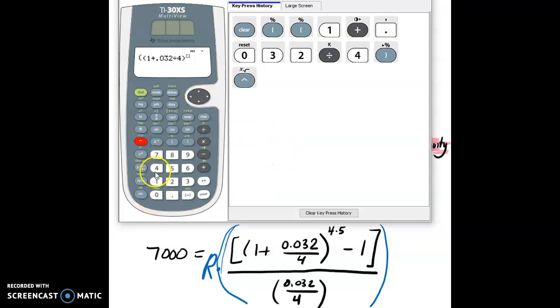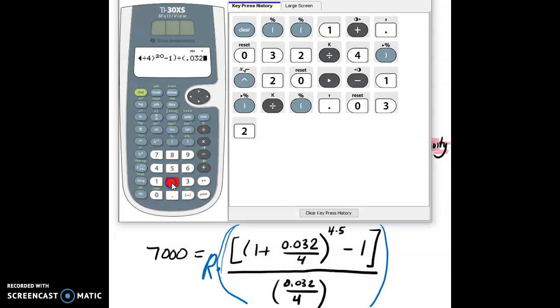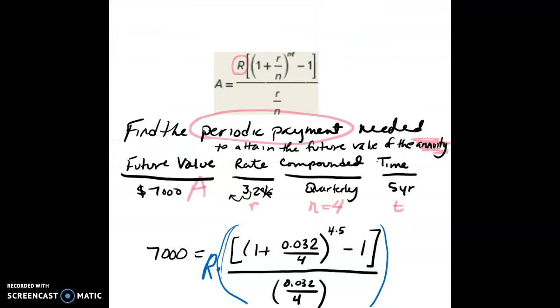Raise it to the four times five power, or 20 you could write. Then right arrow over, subtract one, close that outside parenthesis. Now divide it by 0.032, divided by four. Close the denominator parenthesis. Hit enter. So this whole thing that I circled in the blue is 21.5955.